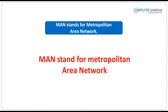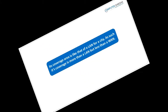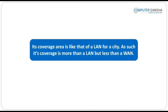MAN stands for Metropolitan Area Network. Its coverage area is like that of a LAN for a city. Its coverage is more than a LAN but less than a WAN. It offers speeds of 10 megabytes to 100 megabytes and it is used like a city cable network.